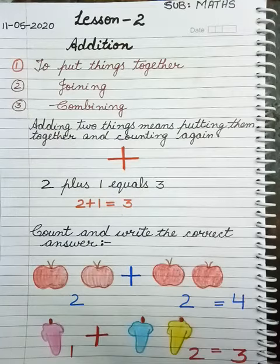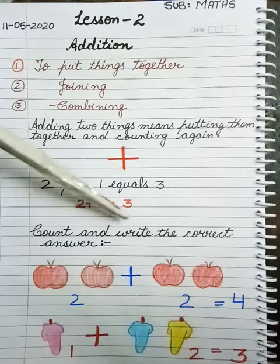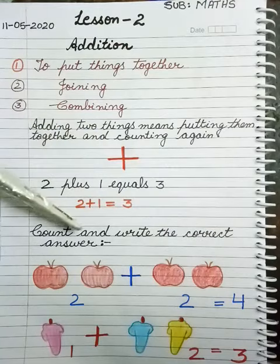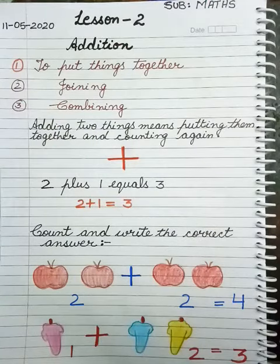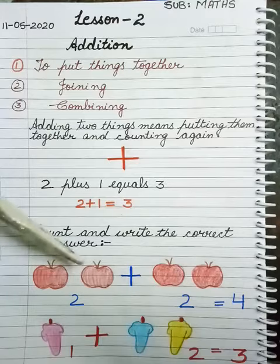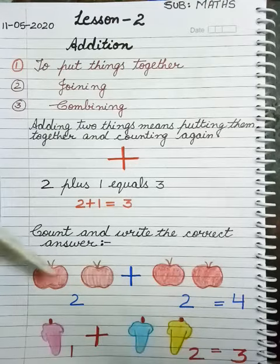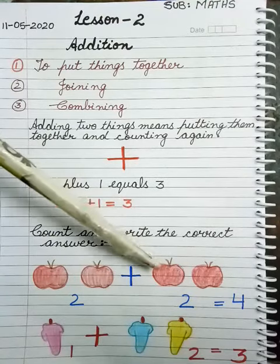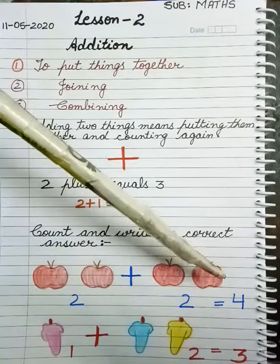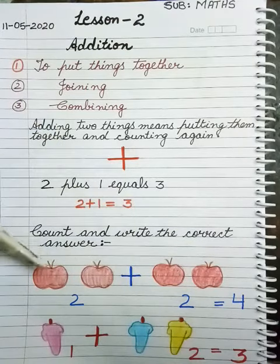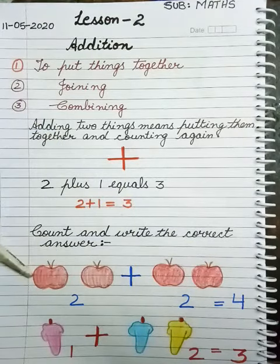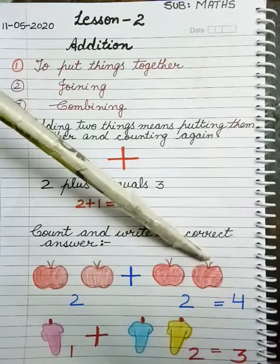Now see this exercise. Count and write the correct answer. Now here how many apples are there? 1, 2 and here 1, 2. So how many all together? Let's count. 1, 2, 3, 4.